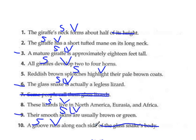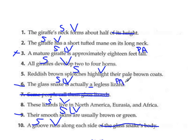So we only have three linking verbs. A giraffe is what? A giraffe is tall. Is tall an adjective? Sure — so we'll make that one a PA. The snake is what? A legless lizard. Lizard is a noun, so it's a PN. And the skins are what? Brown or green — so those are both PAs as well.